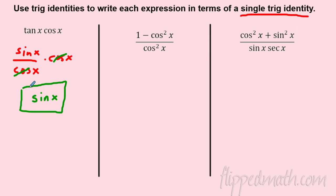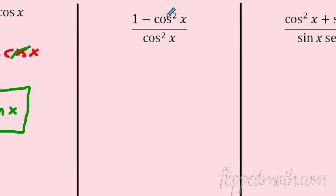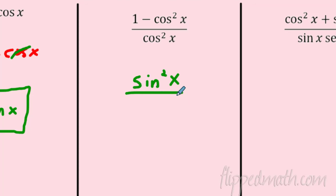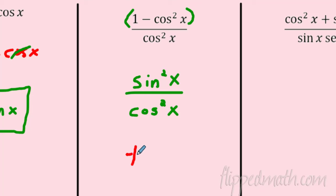Anytime you see something squared, think Pythagorean identity. For example, (1 − cosine²) divided by cosine is an identity — 1 − cosine² is just sine². So rewrite the numerator as sine², and then sine² over cosine... wait — sine over cosine is tangent, so sine² over cosine is tangent squared.